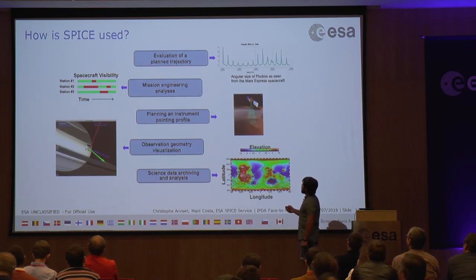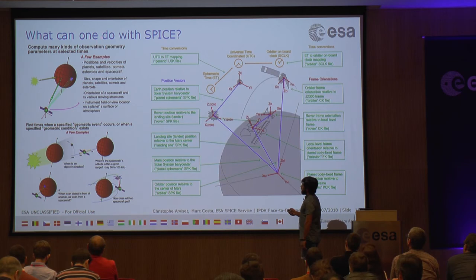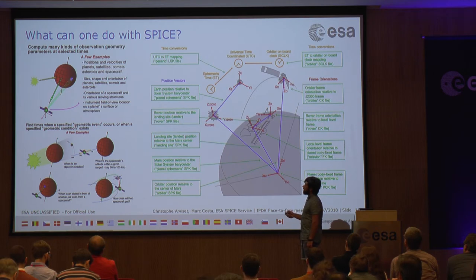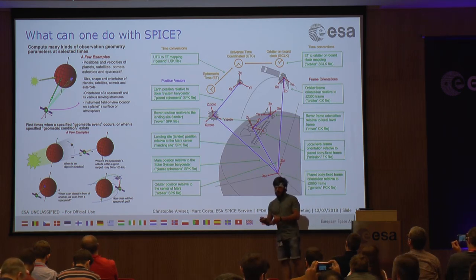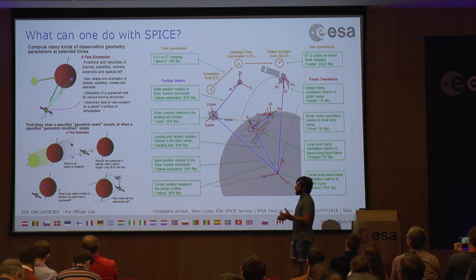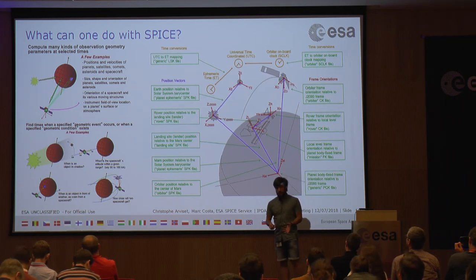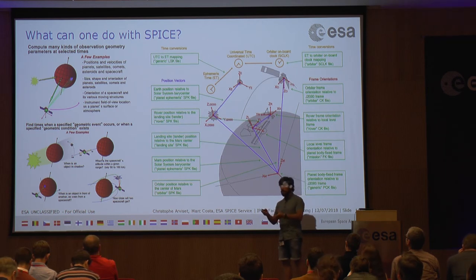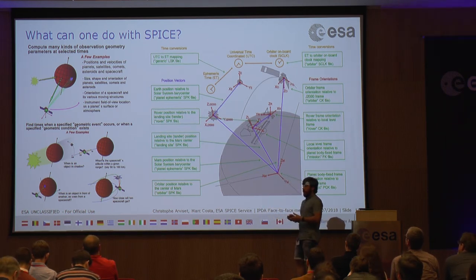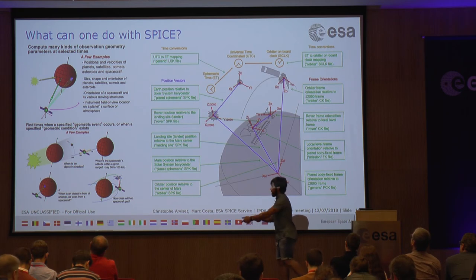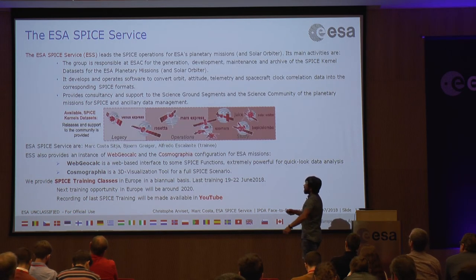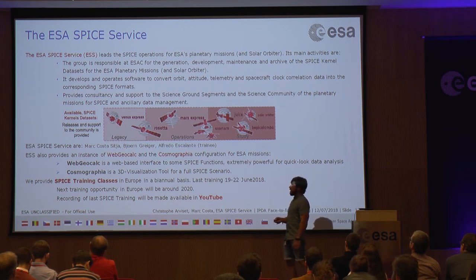How do we use SPICE? We can do many things. We can compute any kind of parameters such as positions, velocities, size, shape. We can solve the direct problem — give me time and I'll give you the geometric quantity — but we can also solve the inverse problem, where you give a geometry condition and get back the windows of opportunity in which those conditions are met. For example: tell me when I am within a given range of distance with respect to a certain body.